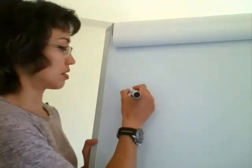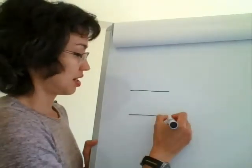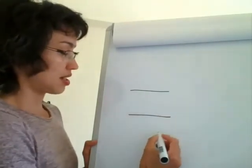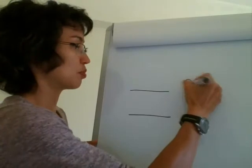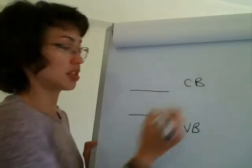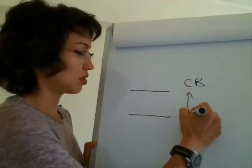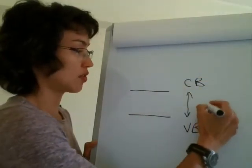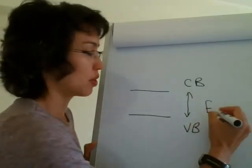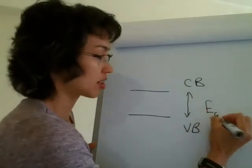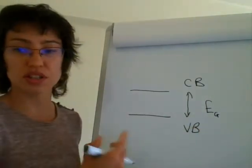The most basic thing you need to be able to do is draw the bands. So this would be your valence band, and this would be your conduction band. In between the two you've got a band gap, and we denote the band gap with E subscript G.